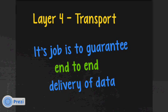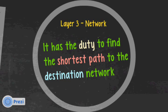Layer three is the network layer. It has the duty to find the shortest path to the destination network. 'Shortest path' doesn't mean the shortest physical distance — it typically means the shortest time. Different routing protocols use different metrics, such as congestion on the network, bandwidth to the destination, reliability, and hop count — how many routers the data has to pass through.